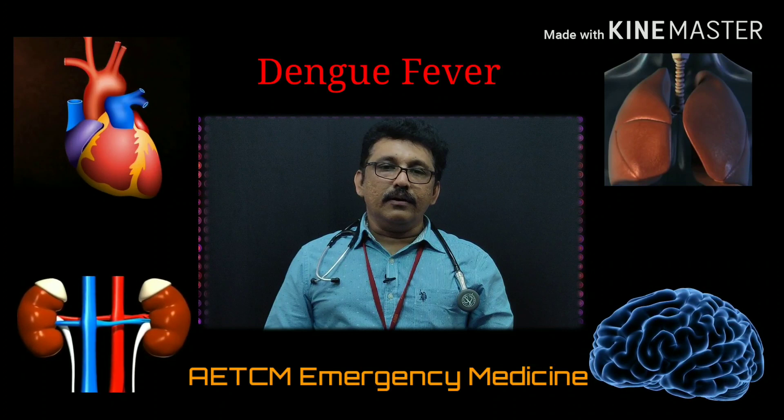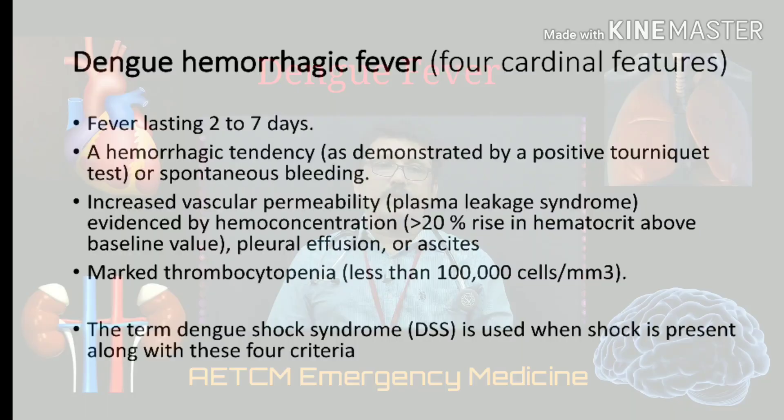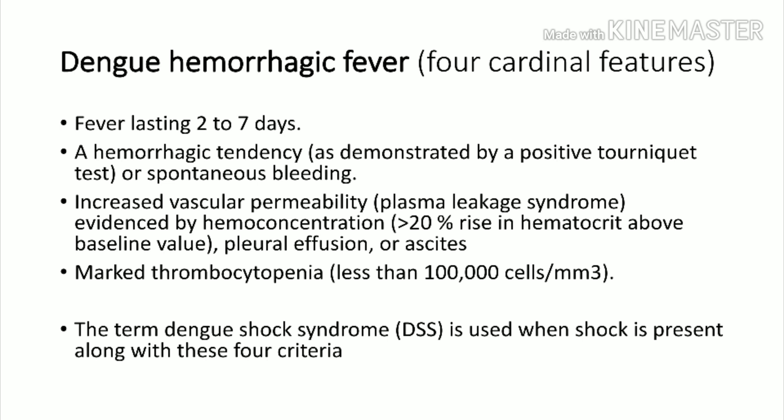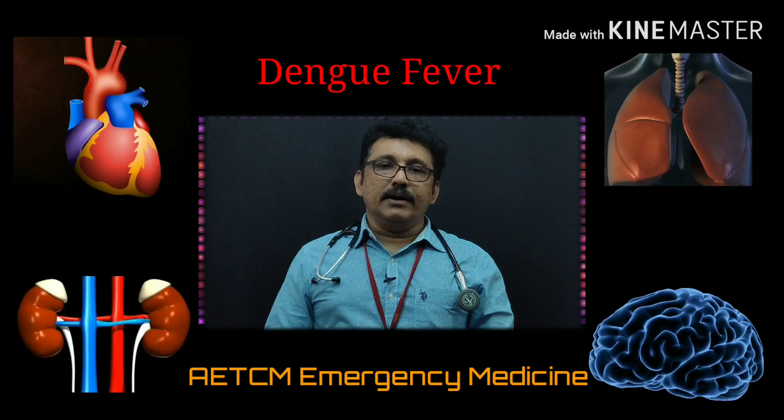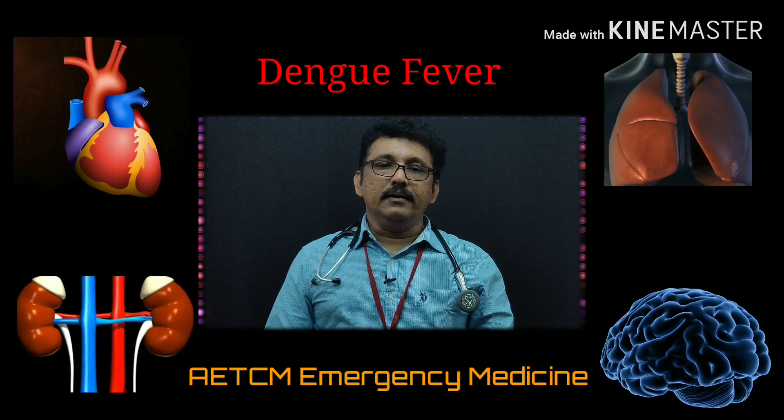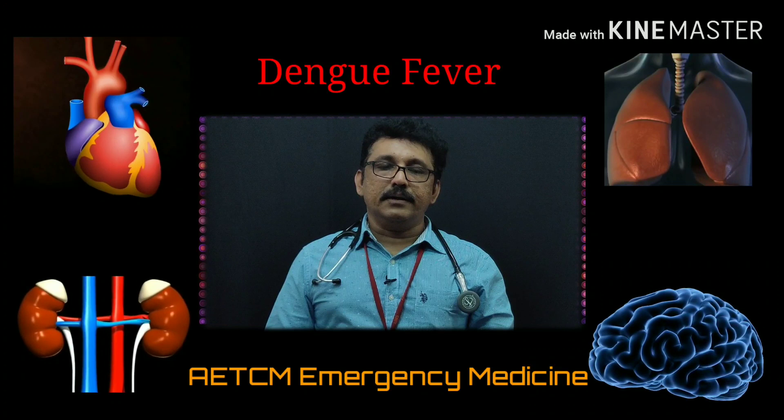There are 4 cardinal features of dengue hemorrhagic fever: fever lasting 2 to 7 days, hemorrhagic tendency, increased vascular permeability, and marked thrombocytopenia with platelet count less than 1 lakh. So the key features are high-degree fever, hemorrhagic tendency, increased vascular permeability causing hypotension and shock, and thrombocytopenia with platelet count less than 1 lakh cells per cubic millimeter.